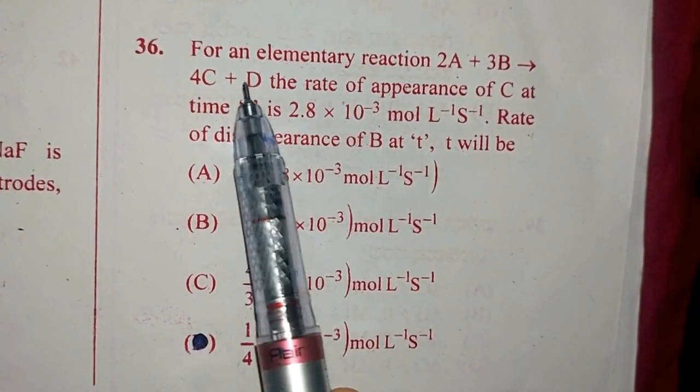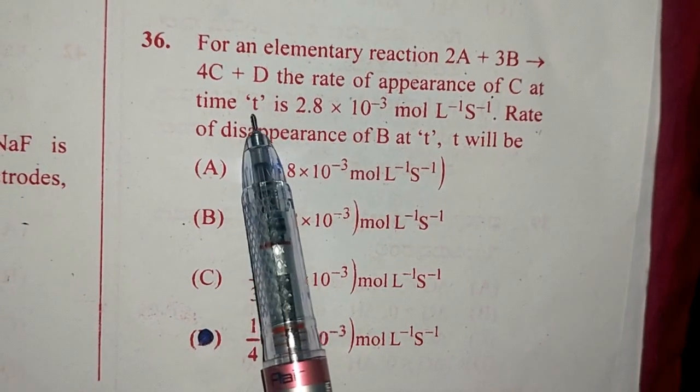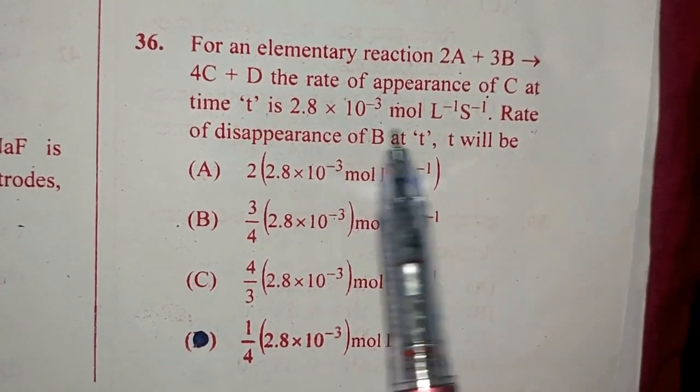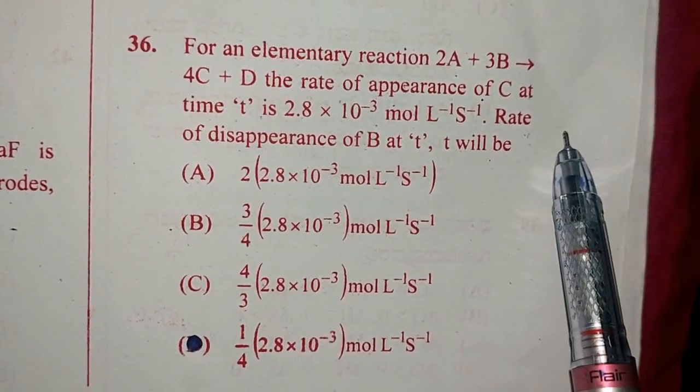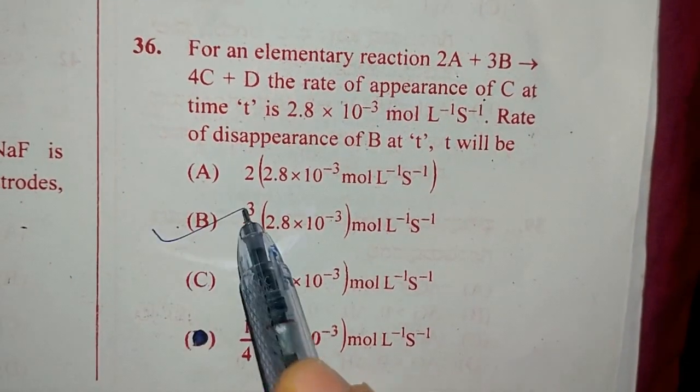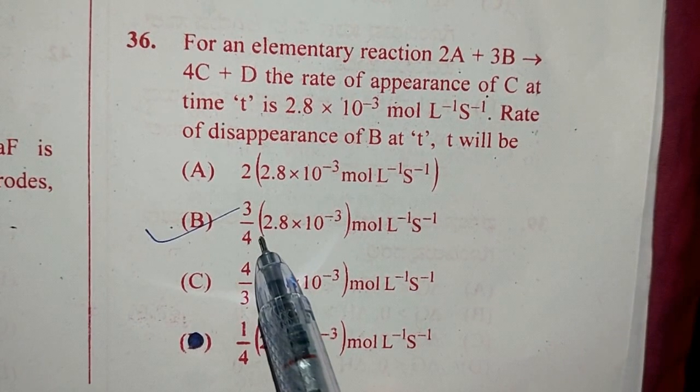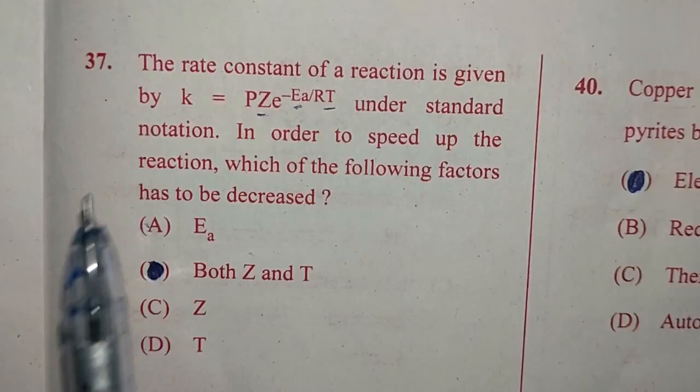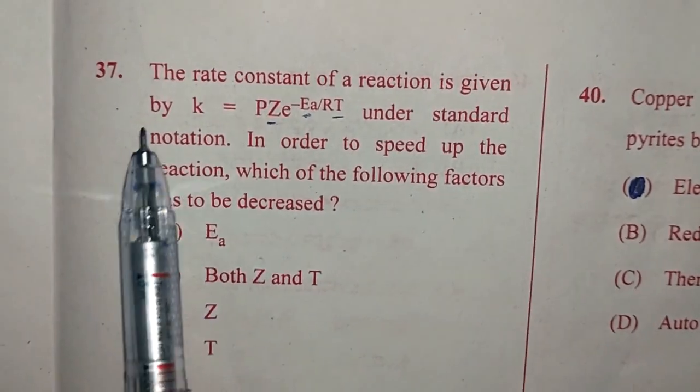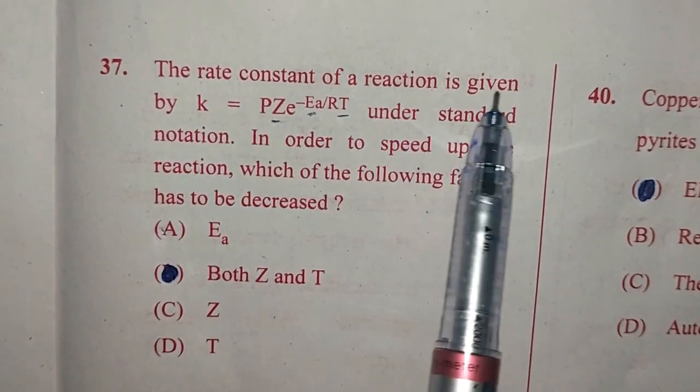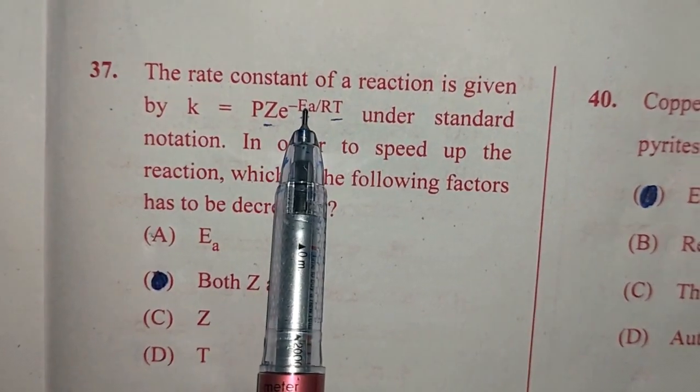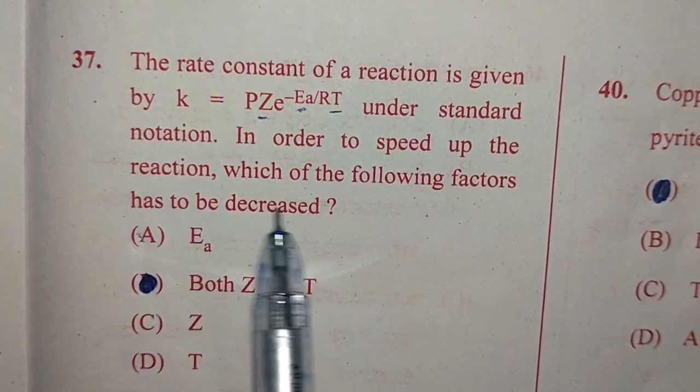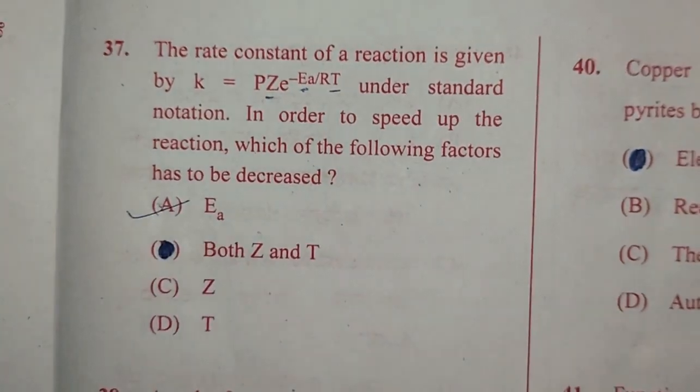Question number 36. For an elementary reaction 2A plus 3B forming 4C plus D, the rate of appearance of C at time T is 2.8 into 10 to the power minus 3 mol per liter per second. Rate of disappearance of B at T will be. So the answer for this question is 3 by 4, 2.8 into 10 to the power minus 3 mol per liter per second, option B. Question number 37. The rate constant of a reaction is given by K equals Pz e raised to minus Ea divided by RT under standard notation. In order to speed up the reaction which of the following factors has to be decreased? It is energy of activation, option A.